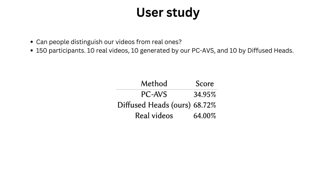We conducted a user study to assess the quality of our results. 150 participants from various backgrounds were asked if the presented videos were real or not. We used 10 ground truth clips, 10 generated by PCA-VS, and 10 by Diffused Heads. Our method significantly outperformed PCA-VS, and the videos were hard to distinguish from the real ones. Diffused Heads also generalizes well to identities and voices not used during training.